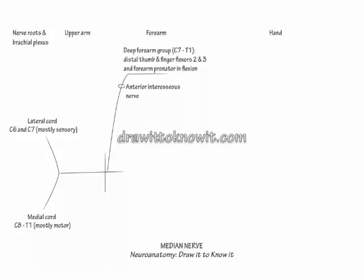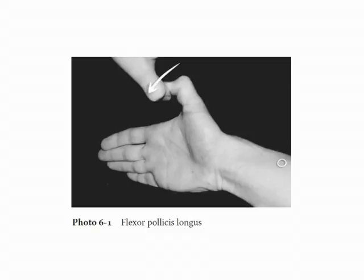To demonstrate the action of flexor pollicis longus, flex the distal interphalangeal joint of your thumb. It is the long flexor of the thumb in that it passes the metacarpal phalangeal joint to flex the interphalangeal joint.